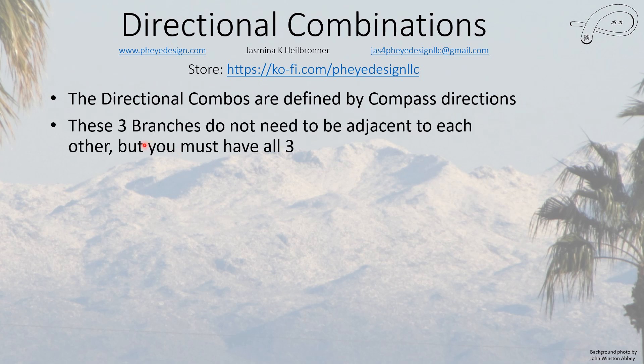There are three branches that are involved in any directional combination, and there are four different ones. They do not need to be adjacent in your chart, but you must have all three if you want that to be a permanent thing in your chart.